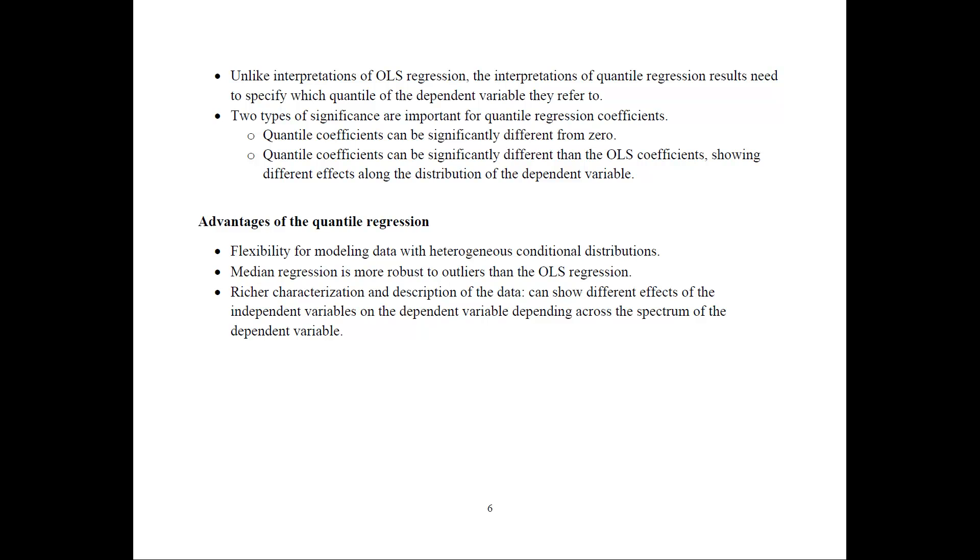Finally, the advantages of quantile regression: first, flexibility for modeling data that has heterogeneous conditional distributions or non-normal distributions. The median regression is more robust to outliers than normal OLS regression. And the best reason is that it provides a richer characterization and description of the data, showing different effects of independent variables on the dependent variable across the whole spectrum of the dependent variable. Thanks for watching this video — join me to see the quantile regression example video.